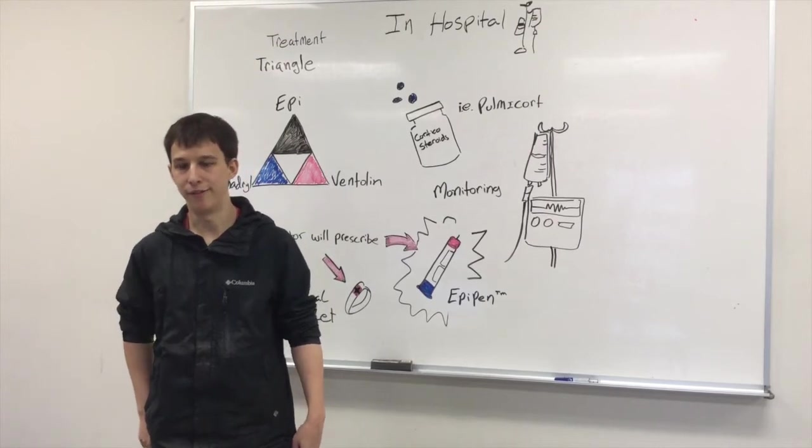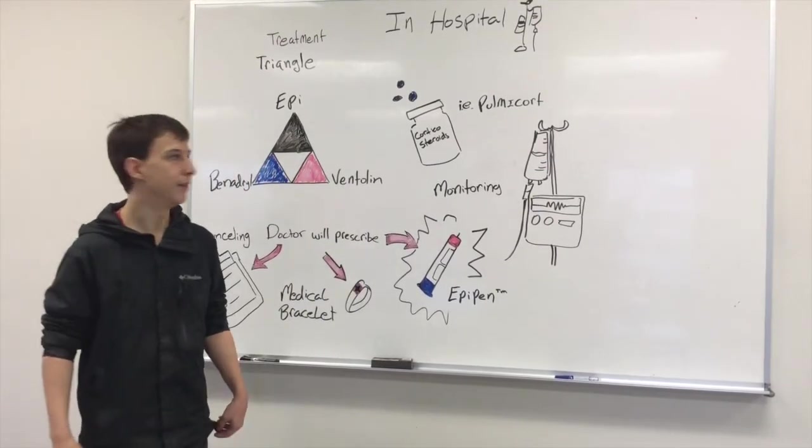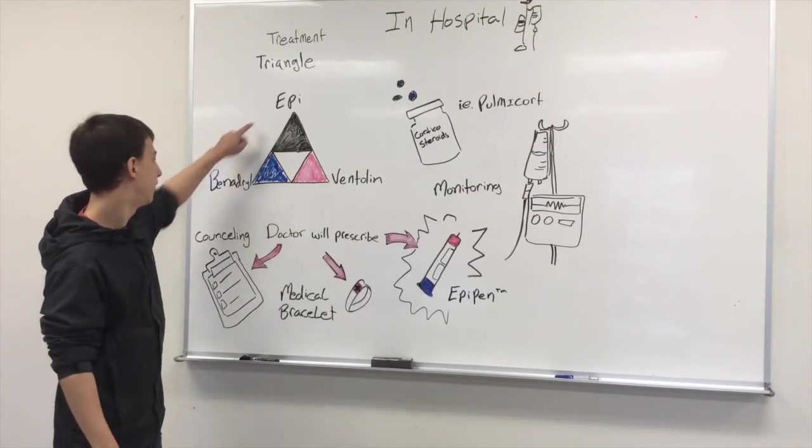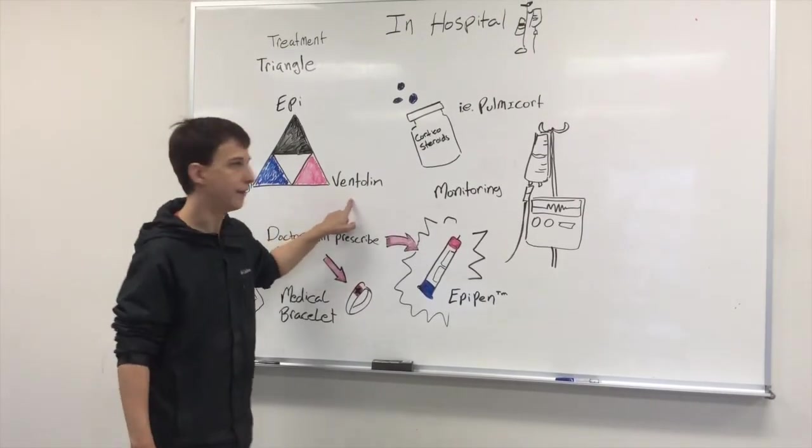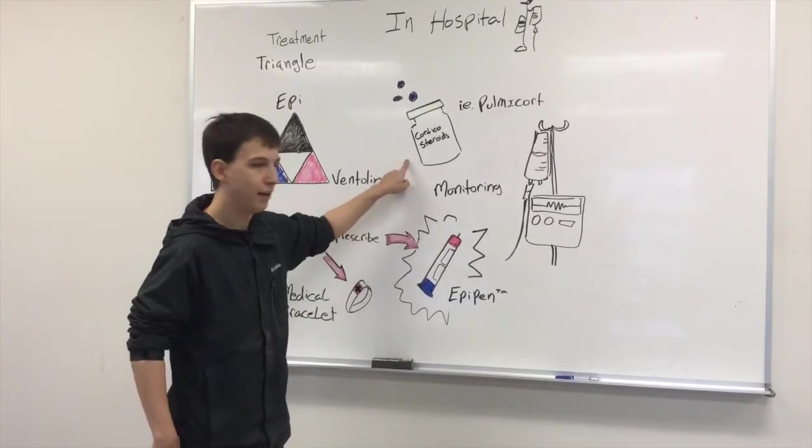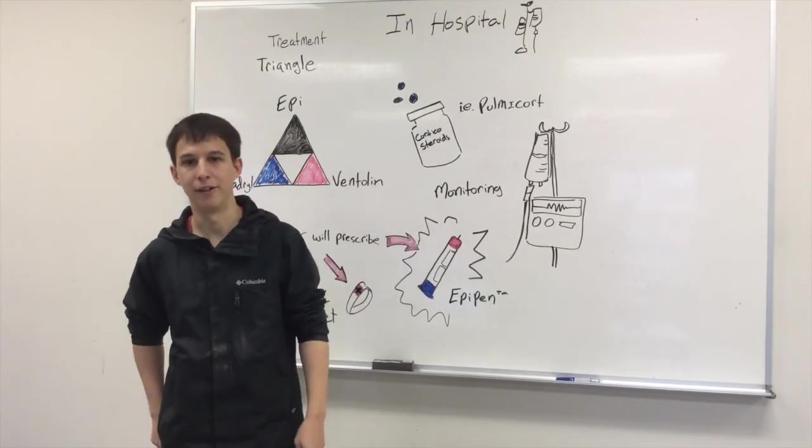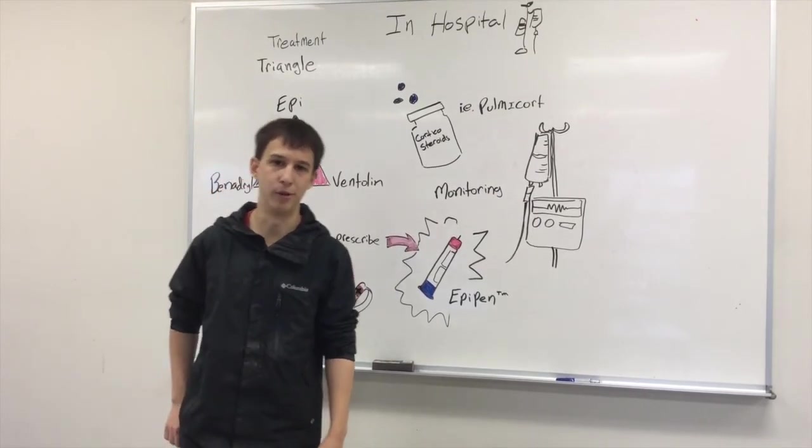In-hospital treatment for anaphylactic shock doesn't differ a whole lot from pre-hospital treatment. They're still going to originally give the treatment triangle: the epinephrine, the Benadryl, and the Ventolin. After that, the only other medication they're going to give in hospital is a corticosteroid such as Solu-Medrol. Then they're going to have to stay in hospital for another 10 to 24 hours, depending on the doctor, for further evaluation to make sure no more symptoms arise.